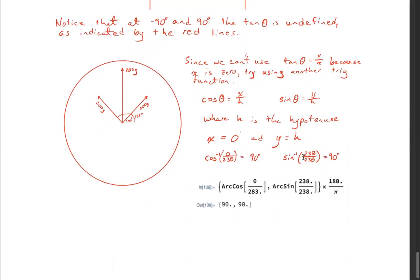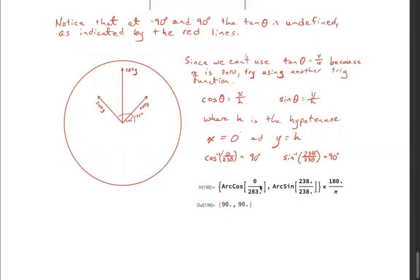Cosine inverse of zero over 283 equals 90. Sine inverse of 283 over 283 equals 90 degrees. And you can see I've done that, arccosine here. In both cases I have them multiplied by 180 divided by pi, and I got 90 and 90.